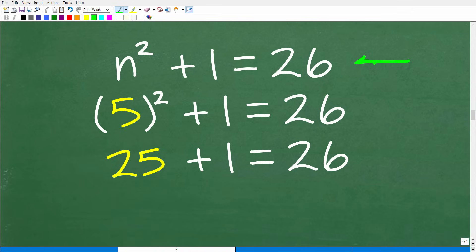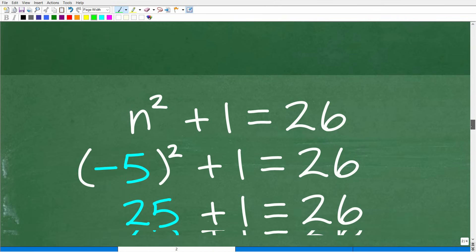We can check these solutions in our original equation. A number squared plus 1 is 26. We plug in 5: 5 squared is 25, 25 plus 1 is 26. 26 equals 26 is a true statement. Negative 5 squared is positive 25 plus 1, 26 equals 26. That works as well.